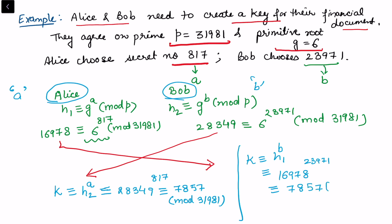Both of them agree on this key, 7857. We can see that both have got the common key, and this is how Diffie-Hellman key exchange works.